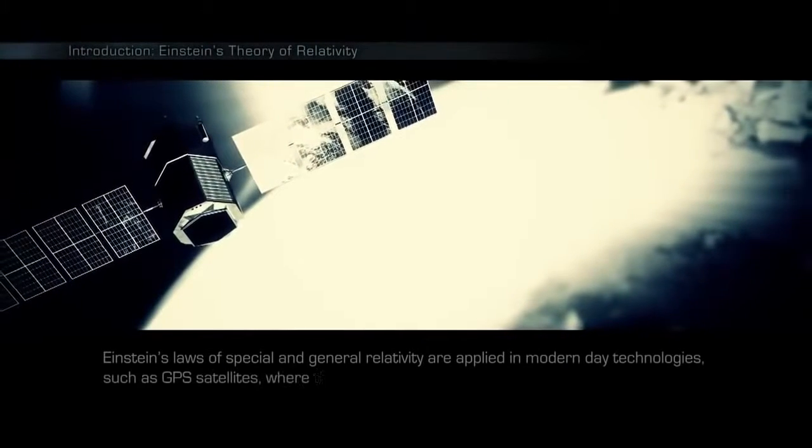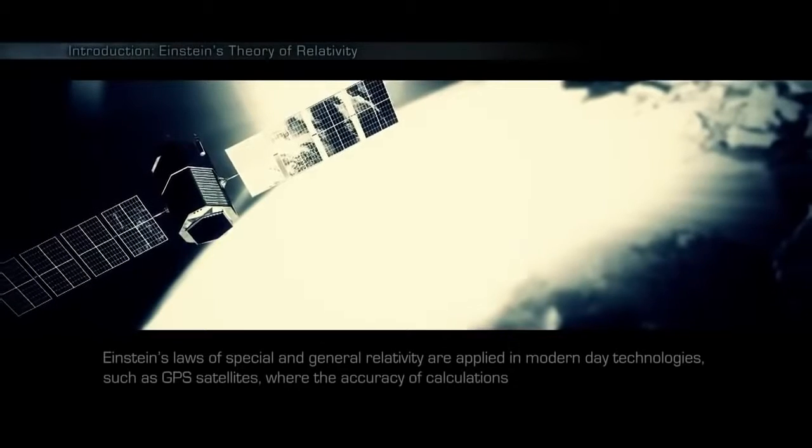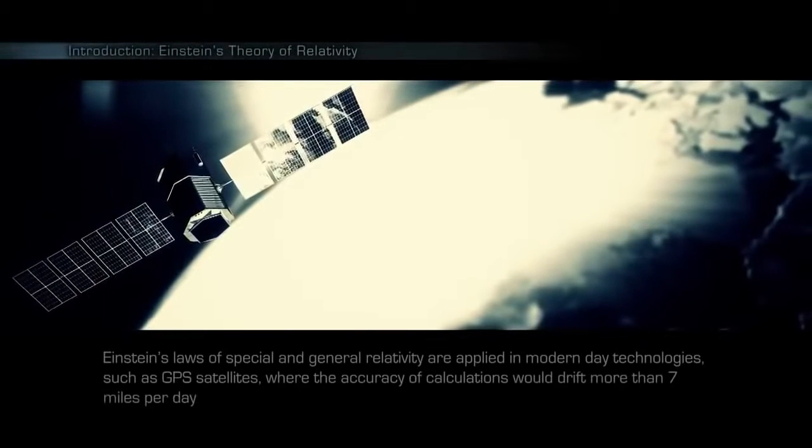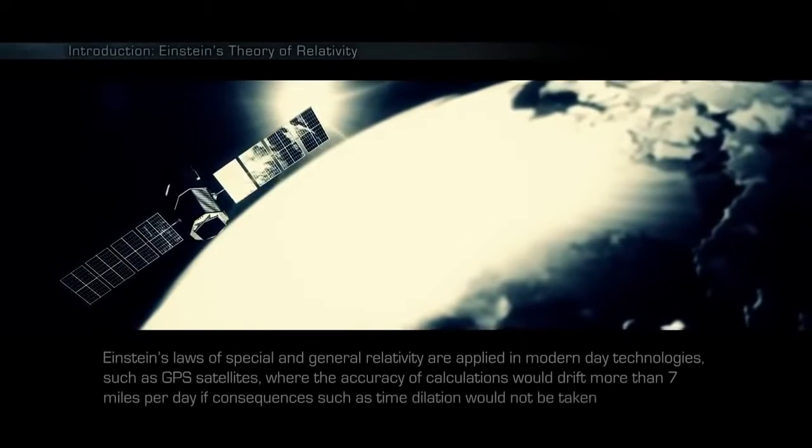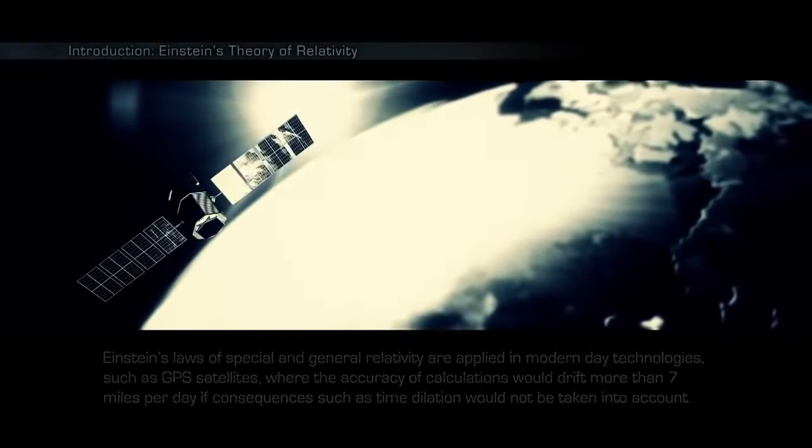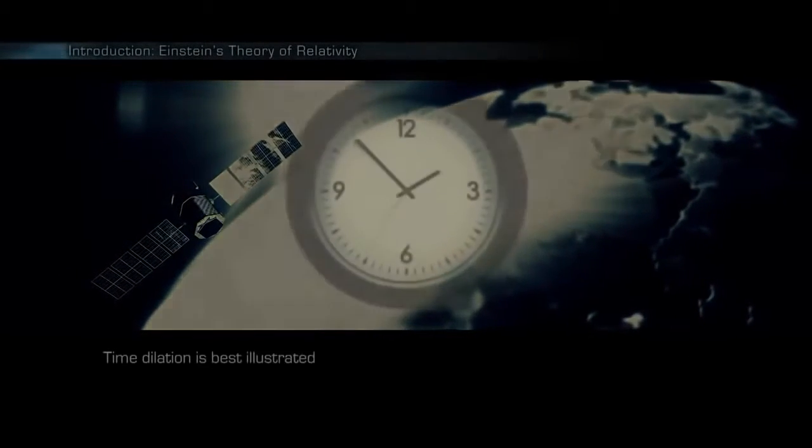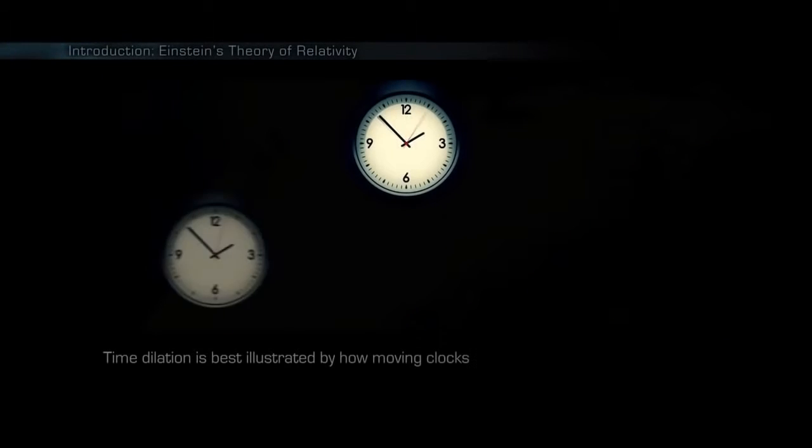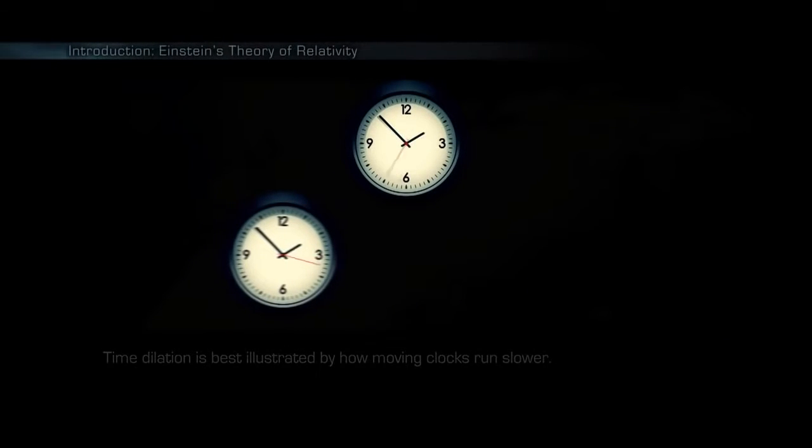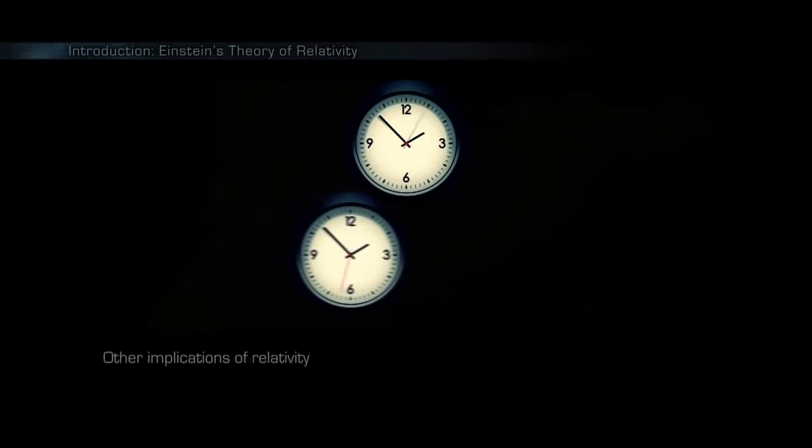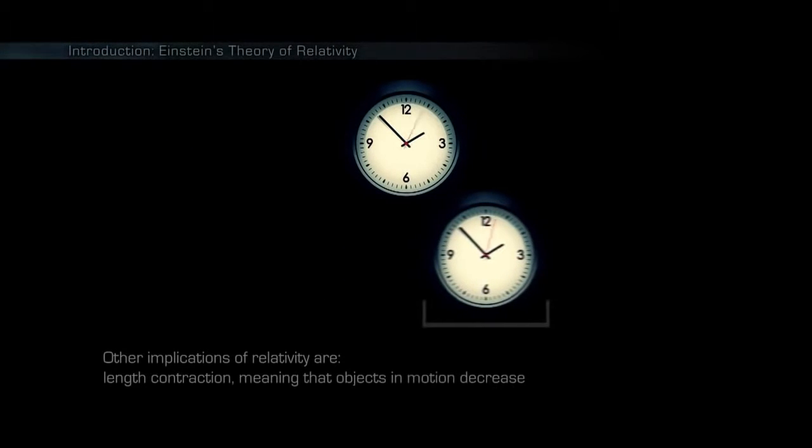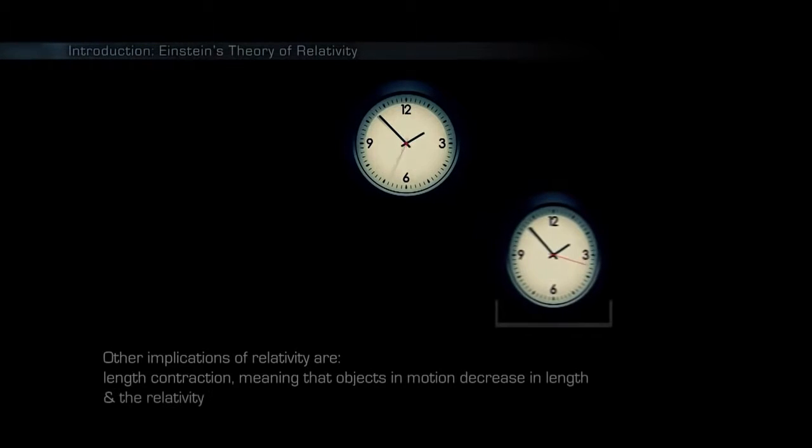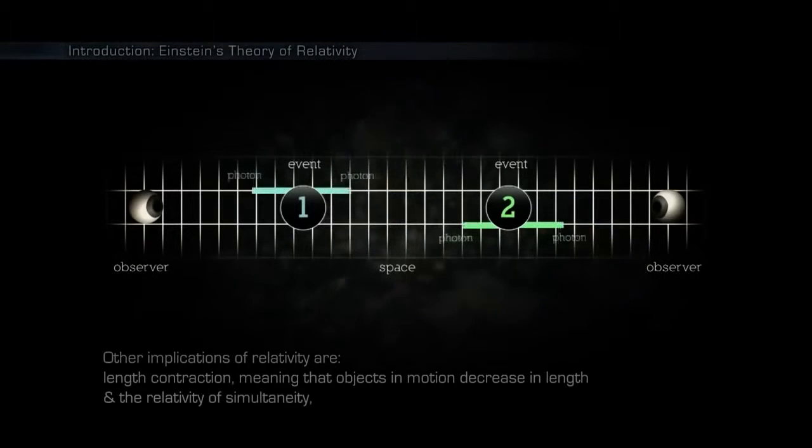Einstein's laws of special and general relativity are applied in modern-day technologies, such as GPS satellites, where the accuracy of calculations would drift more than 7 miles a day if consequences such as time dilation would not be taken into account. Time dilation is best illustrated by how moving clocks run slower. Other implications of relativity are length contraction, meaning that objects in motion decrease in length, and the relativity of simultaneity.